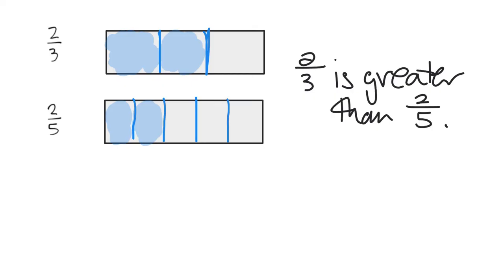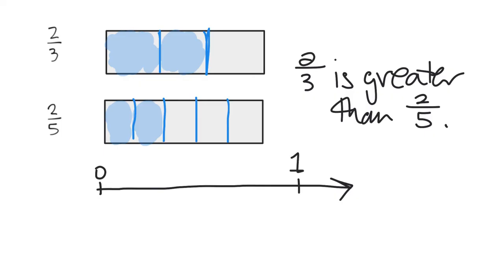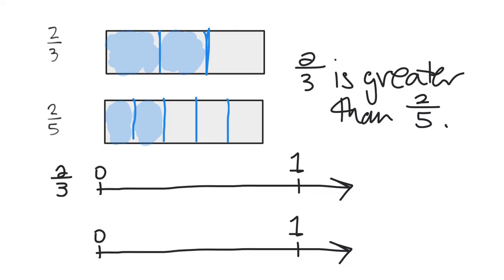If I wanted to do the number line model, that's pretty straightforward — all I have to do is draw identical number lines. I need to duplicate it because I need 2 of them. I'm going to represent 2/3 up here and 2/5 down here. On this number line to represent 2/3, I need to cut it into 3 equal-sized pieces using 2 lines, cutting from 0 to 1 into 3 equal-sized pieces. And I can see that 2/3 — 1, 2 — is going to live right there.